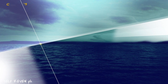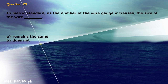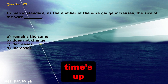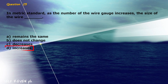Question 25: In metric standard, as the number of the wire gauge increases, the size of the wire blank. A) remains the same, B) does not change, C) decreases, D) increases. The correct answer is letter D, increases.